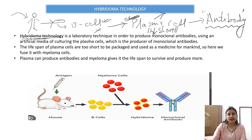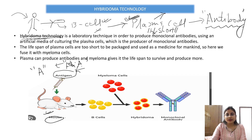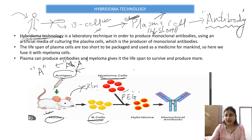In hybridoma technology, we inject an antigen for which we want an antibody. Suppose antigen type A is there and we want its antibody — we inject it into a lab animal, which can be mice or anything. In its spleen, B cells get activated and are extracted from the lab animal. These B cells are then fused with myeloma cells, which have a long lifespan as they are cancerous cells. The fusion occurs in PEG media — polyethylene glycol.